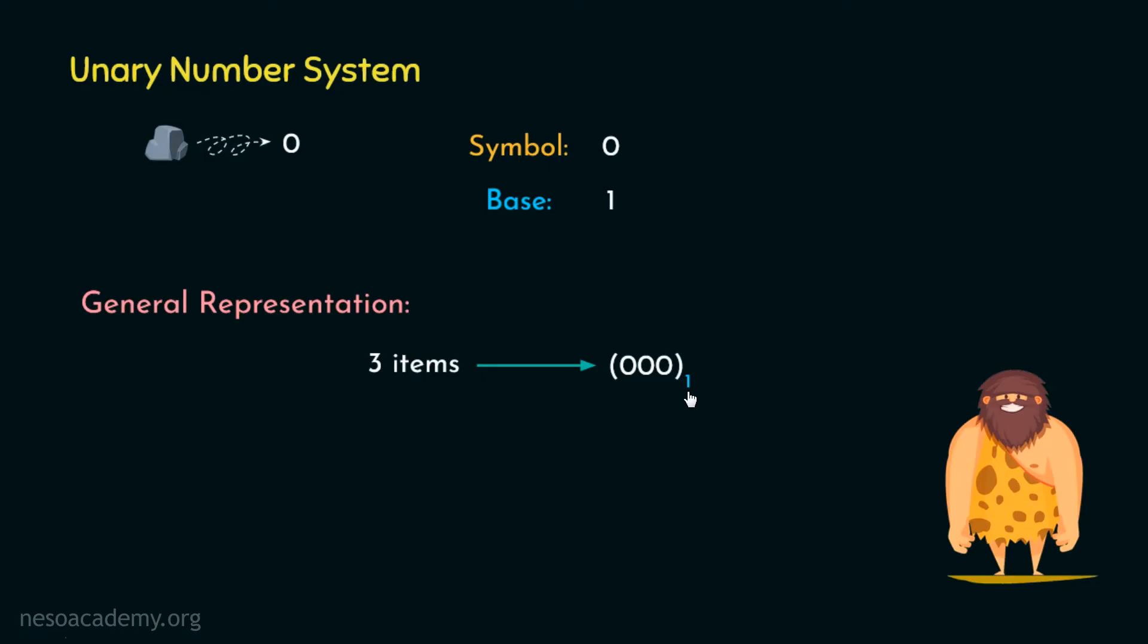So in order to assert in the significance, this subscript is needed. So this is all about the emergence, the logic and the representation of unary number system. Now let's move on to the next part.